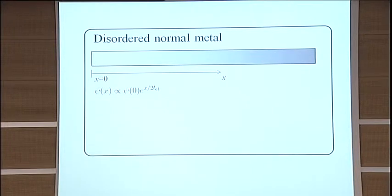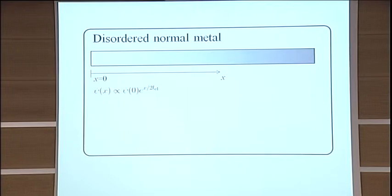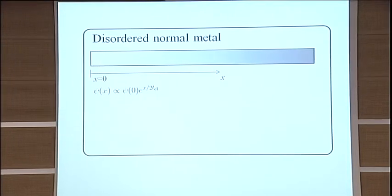You know, disorder in one dimension localizes your electrons, and so you expect that your wave function goes down exponentially. Well, that's not true. It goes up exponentially. And why is that?